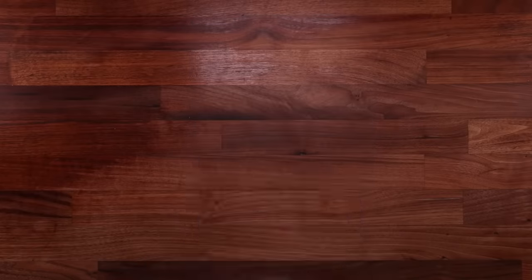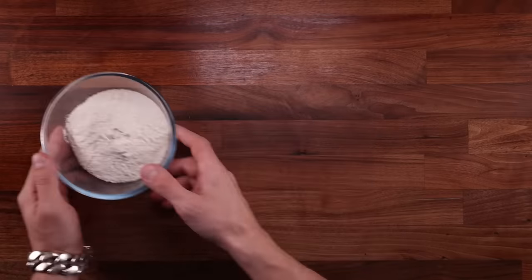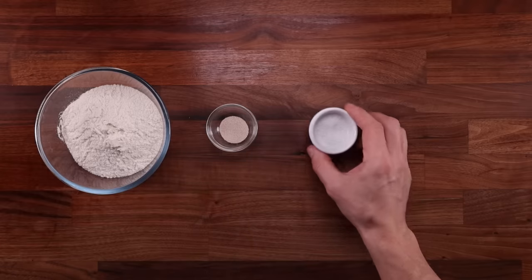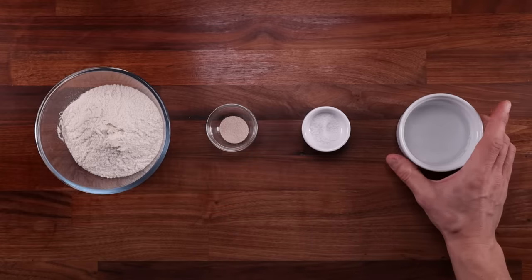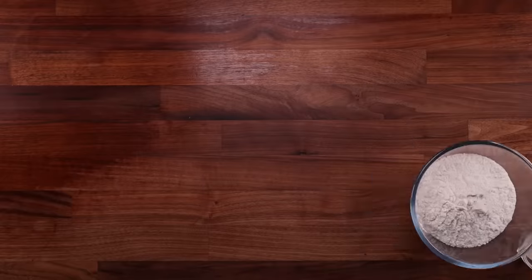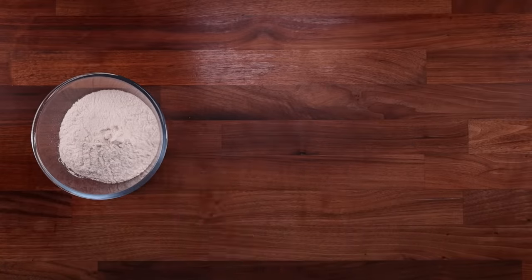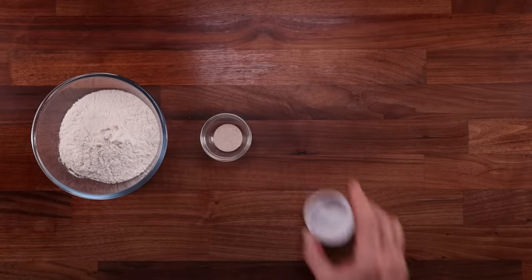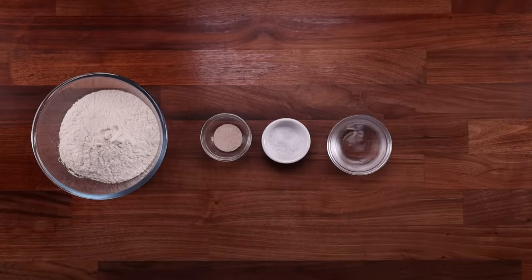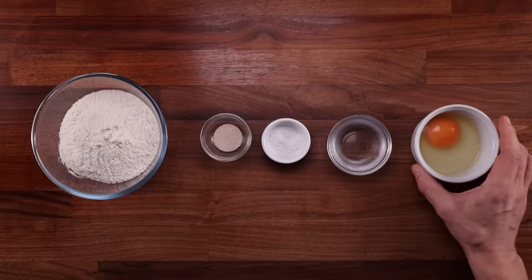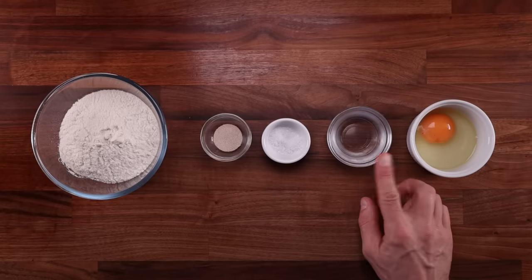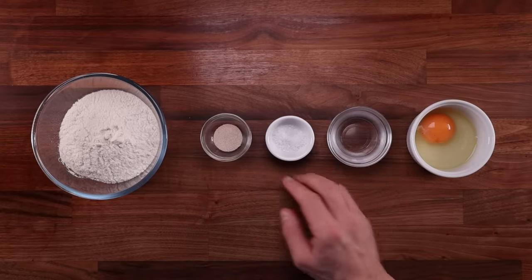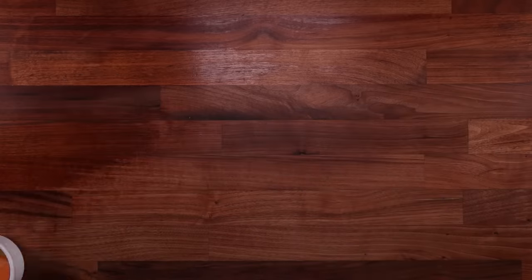We'll make four breads, all containing the same amount of flour, yeast, salt, and water. The first one contains no egg. The second will have flour, yeast, salt, water, and a whole egg. Because we are using egg, I've reduced the amount of water to compensate for the water content already in the egg.